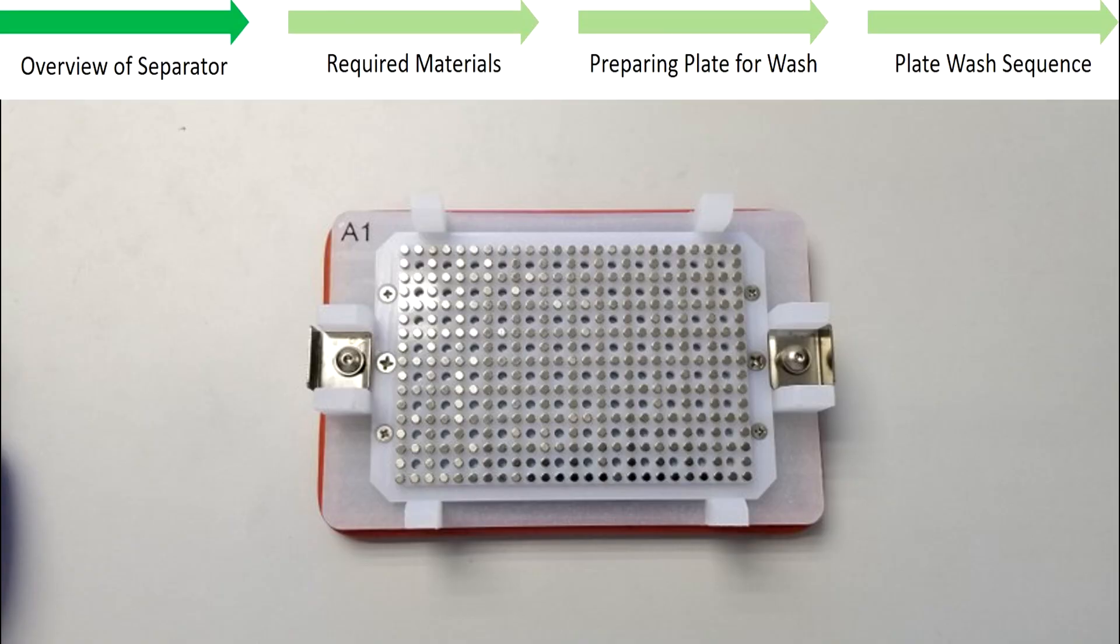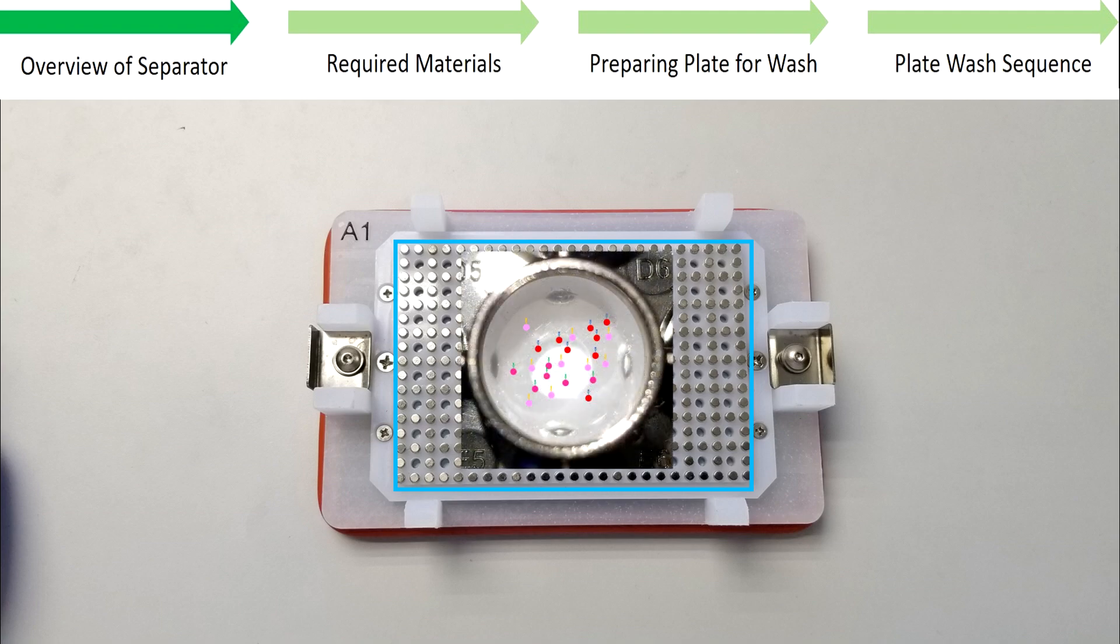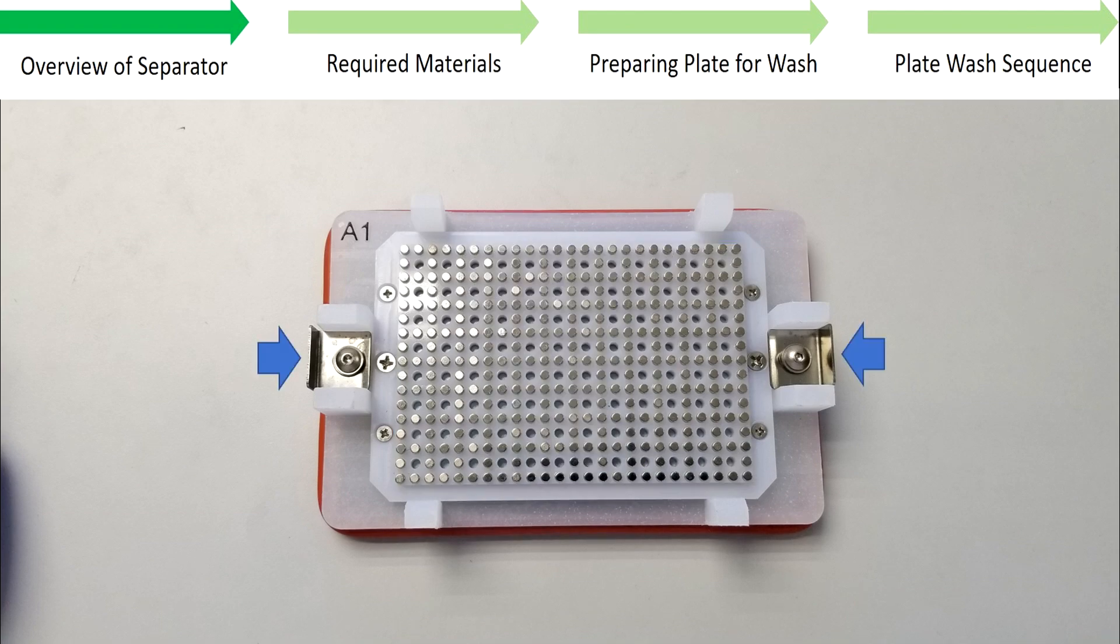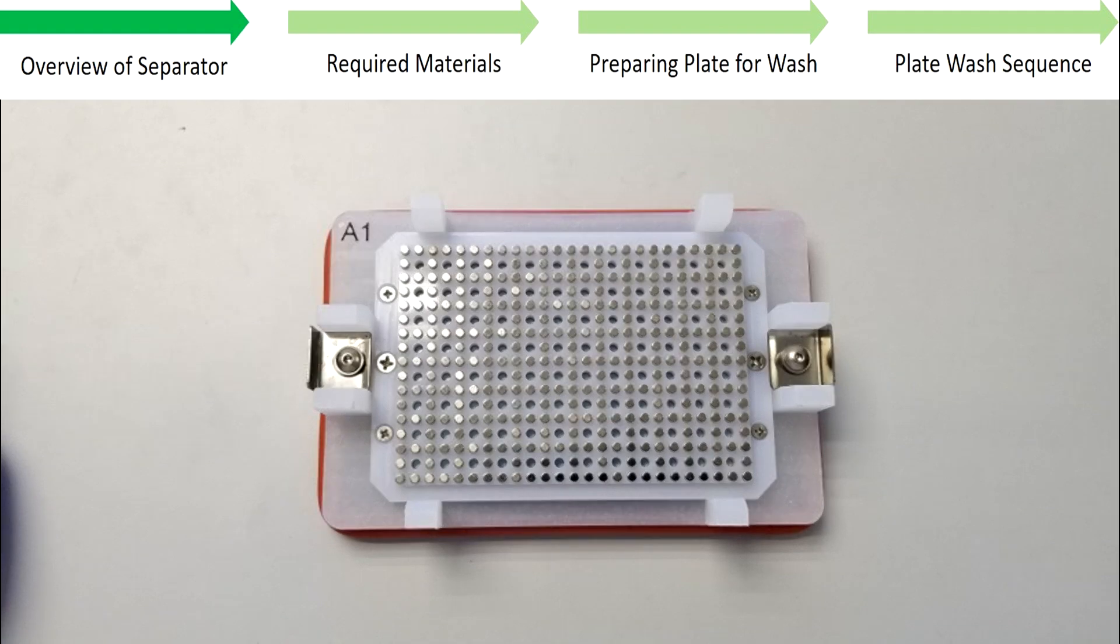Here is a top view of the plate separator. There is an array of magnetic pins arranged throughout the surface of the device where the plate would sit. They enable washing by attracting beads from suspension to the Mylar well bottom, holding them in place while liquid is decanted from the wells. Two metal latches enable secure plate fit, while an orientation guide ensures correct plate positioning. This device is pre-optimized to fit MillPlex assay plates and does not require further adjustments.